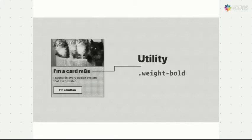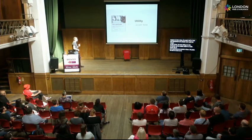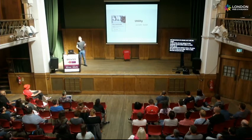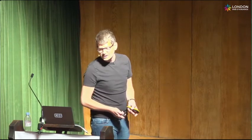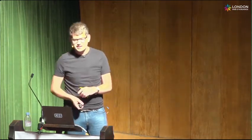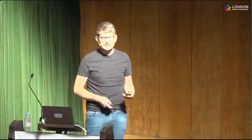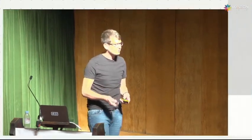We move on to Utility — a class that does one job and does that job well, a bit like a plumber or a tin opener. An example of a utility class is one that centres text or makes it bold. It's a simple, low-fidelity tool. Importantly, it means you can write common CSS and apply it wherever you need it, rather than repeating yourself over and over again.